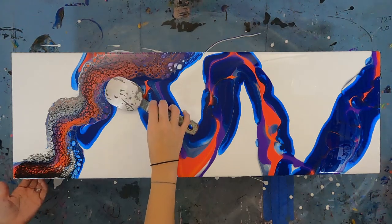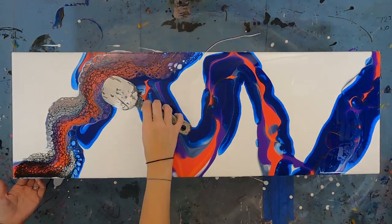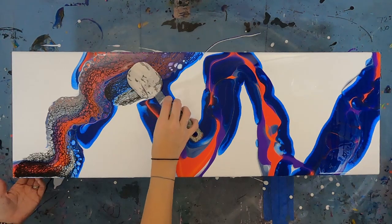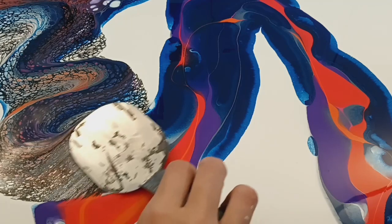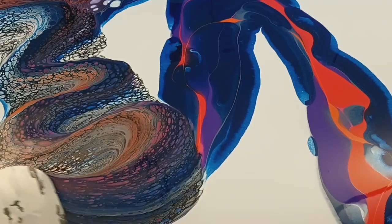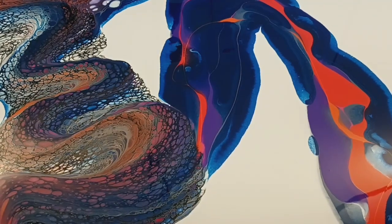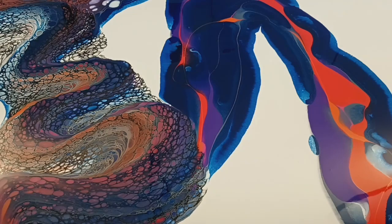The only color that has silicone added in for this pour is the Cell Activator. I'm using a Mars Black with two drops of silicone oil added in. I mixed my Cell Activator exactly like any of the other paints I'm using. The only difference is the added silicone.